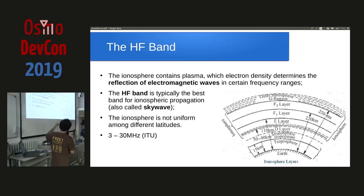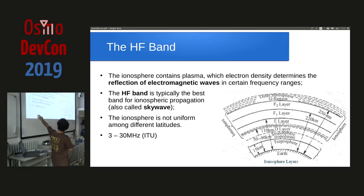By current ITU definition, HF goes from 3 to 30 MHz.